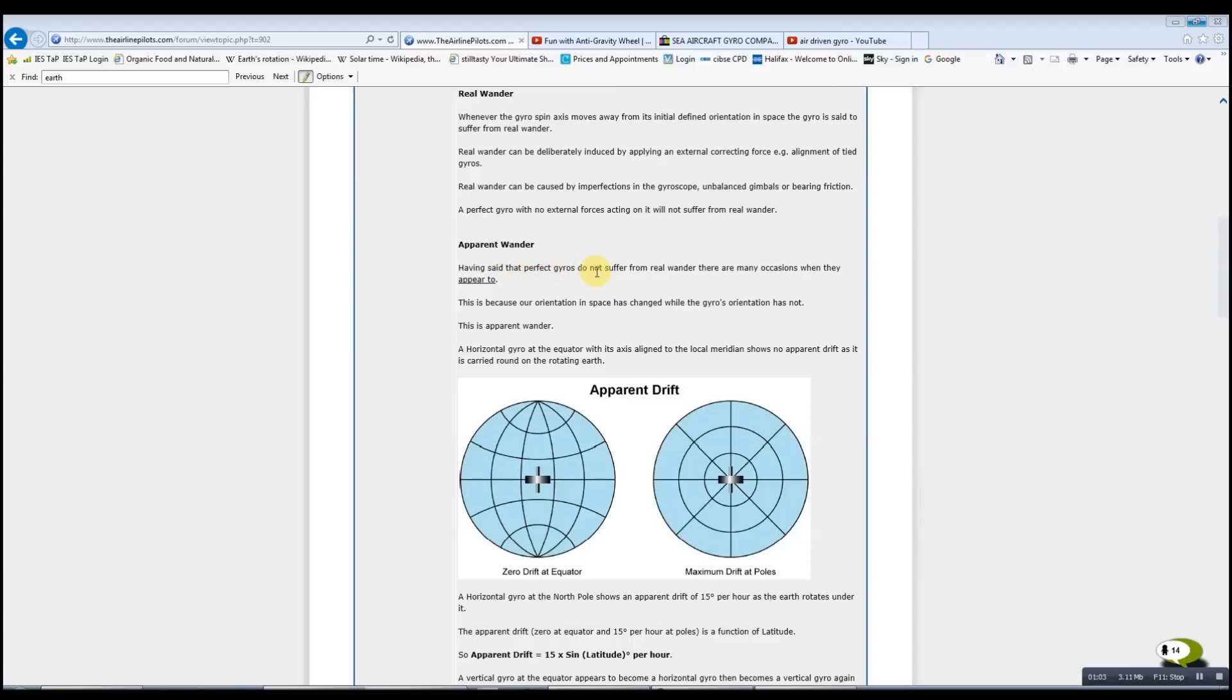So apparent wander, which is the same as apparent drift: there are many occasions when perfect gyros appear to wander. This is because our orientation in space has changed while the gyro's orientation has not. This is apparent wander. A horizontal gyro at the equator with its axis aligned to the local meridian shows no apparent drift as it is carried round on the rotating earth. So what it's saying is this is the side view of the earth with the north pole at the top and the equator across the middle. If you spin up a horizontal gyro at the equator, then you will not experience any drift since the axis of the globe there is aligned with the axis of the gyro.